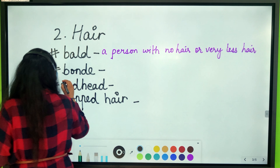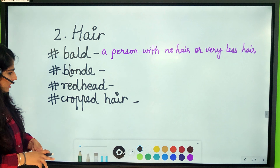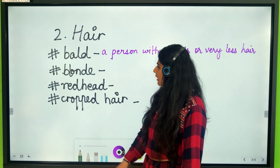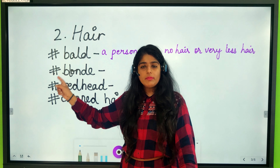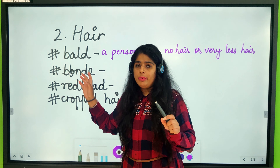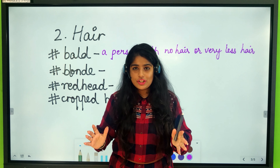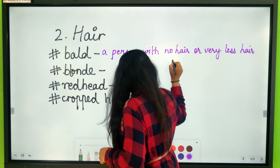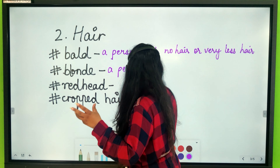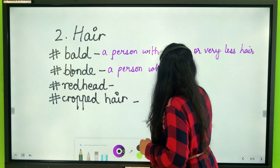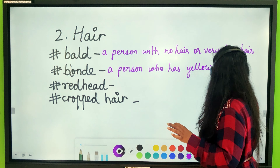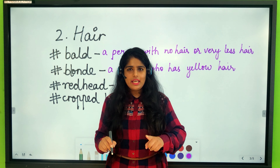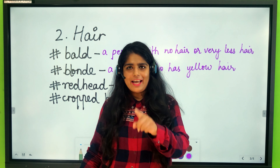The next word is 'blonde' — not 'blondie,' it's pronounced 'blonde.' We use blonde for a person who has yellow or golden hair, just like many British people who mostly have yellow hair. So next time you see someone with yellow hair, don't say 'yellow hair' — say 'blonde hair.'